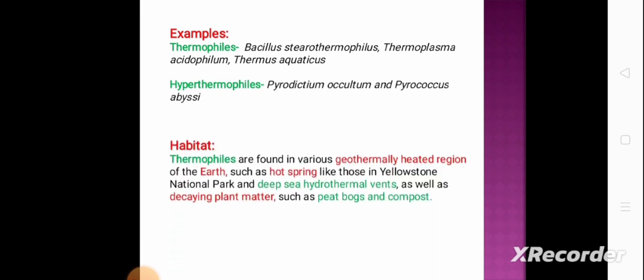The next part is habitat — where are thermophiles and hyperthermophiles found? Thermophiles live at high temperatures and are found in various geothermally heated regions of the earth, such as hot springs like those in Yellowstone National Park, deep sea hydrothermal vents, as well as decaying plant matter such as peat bogs and compost.